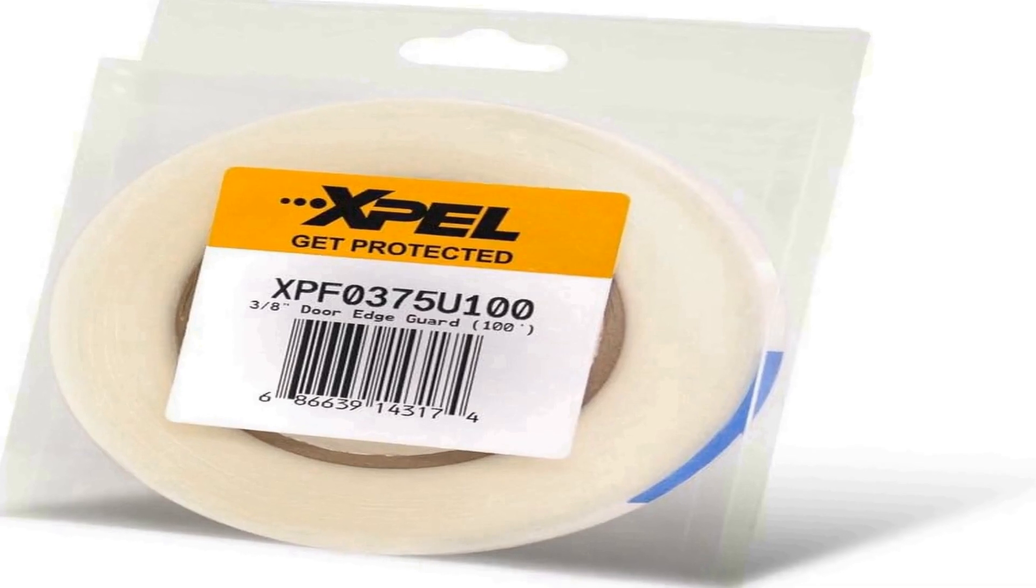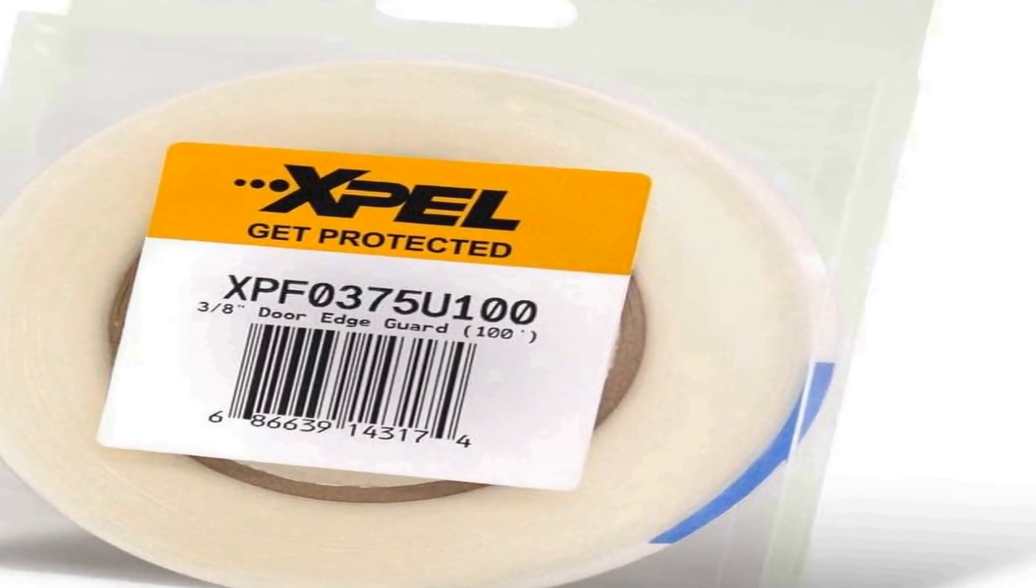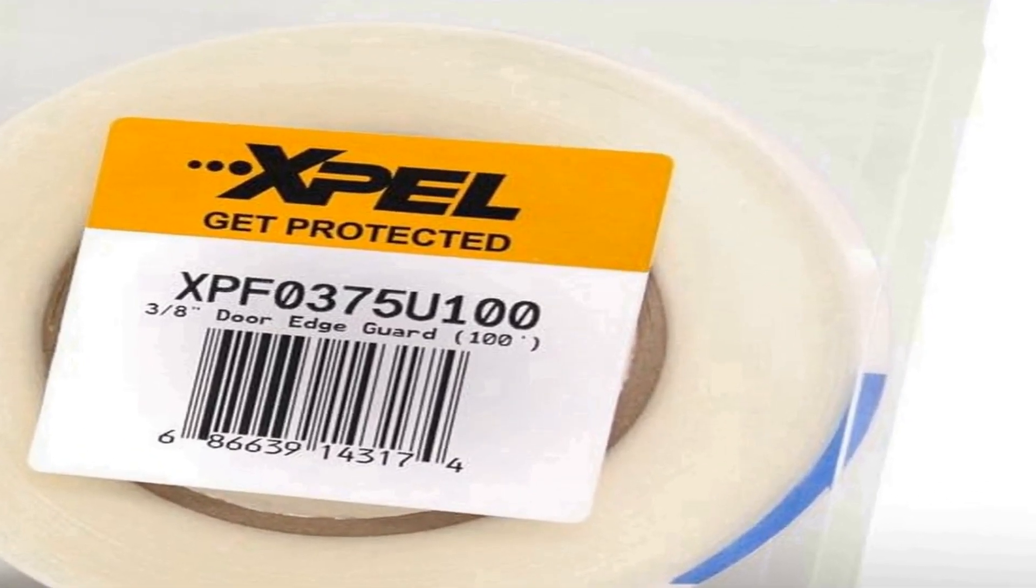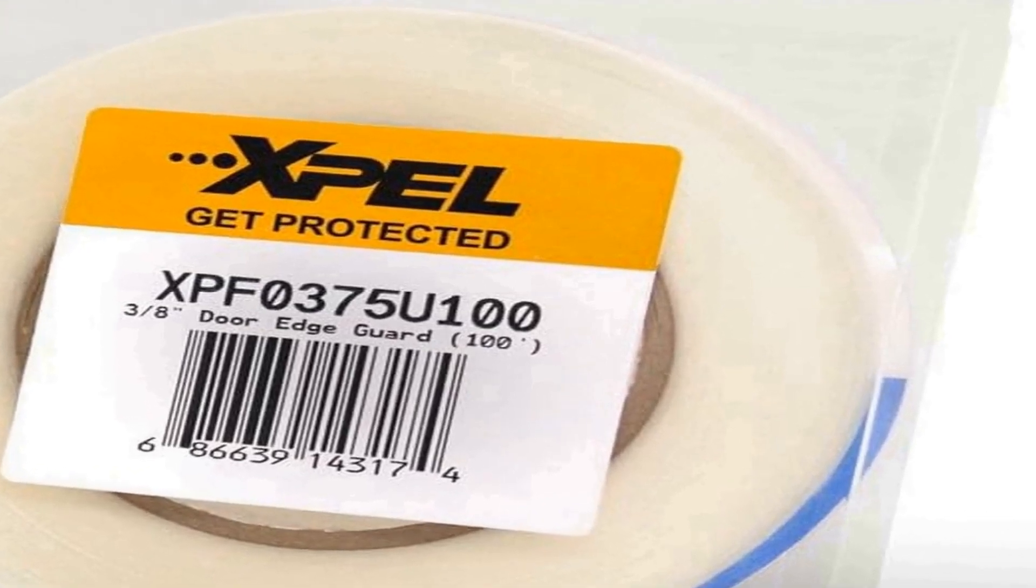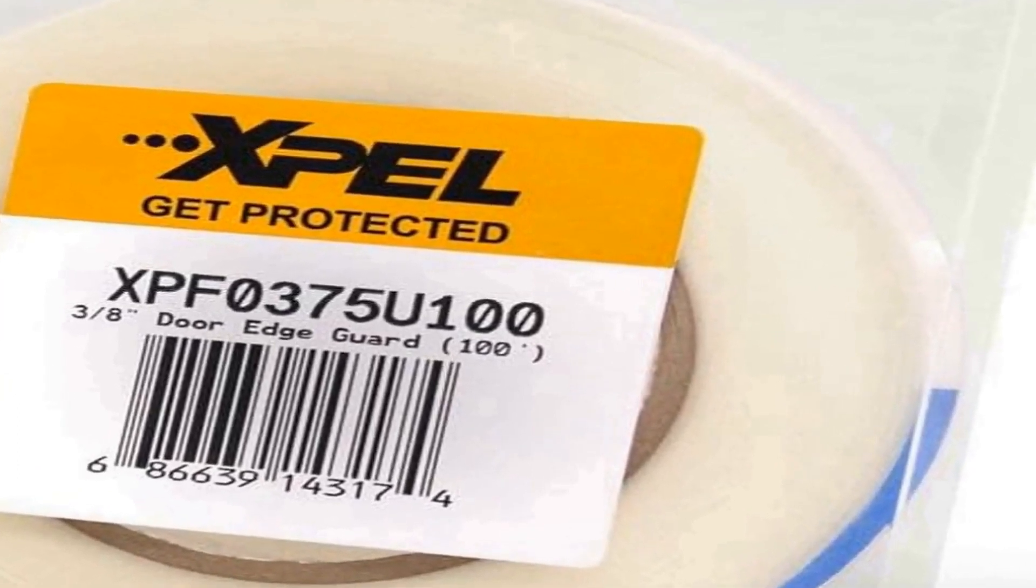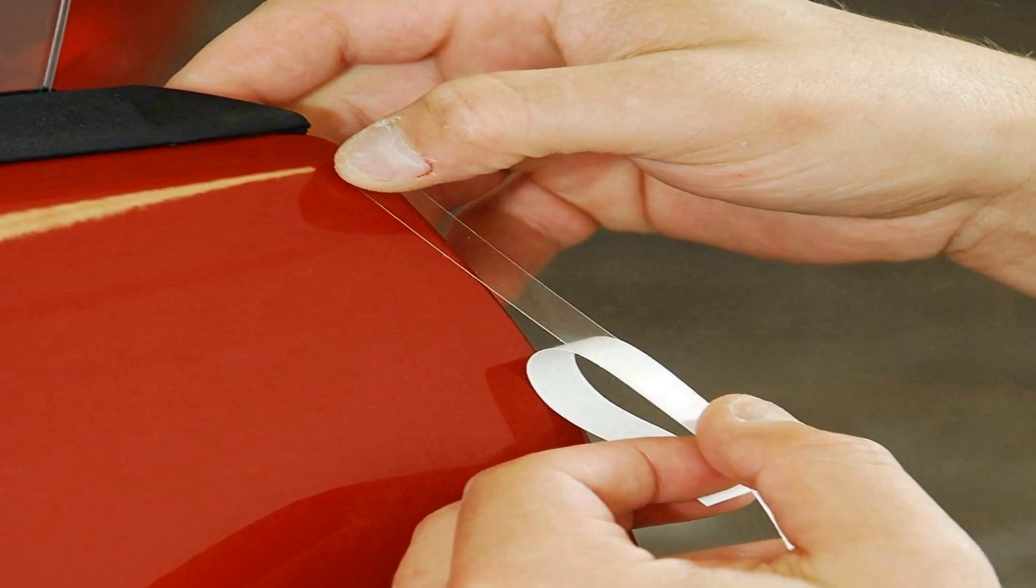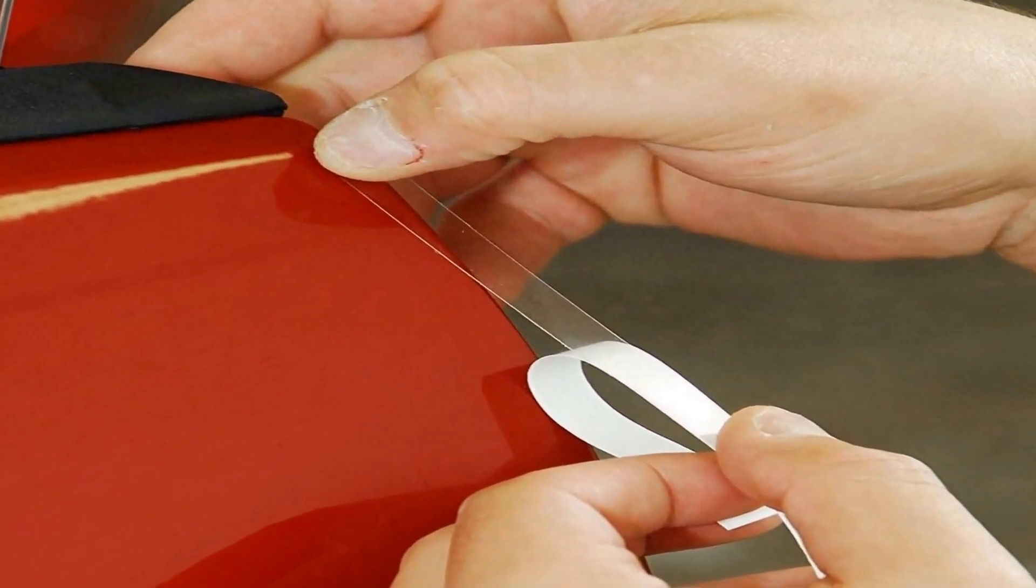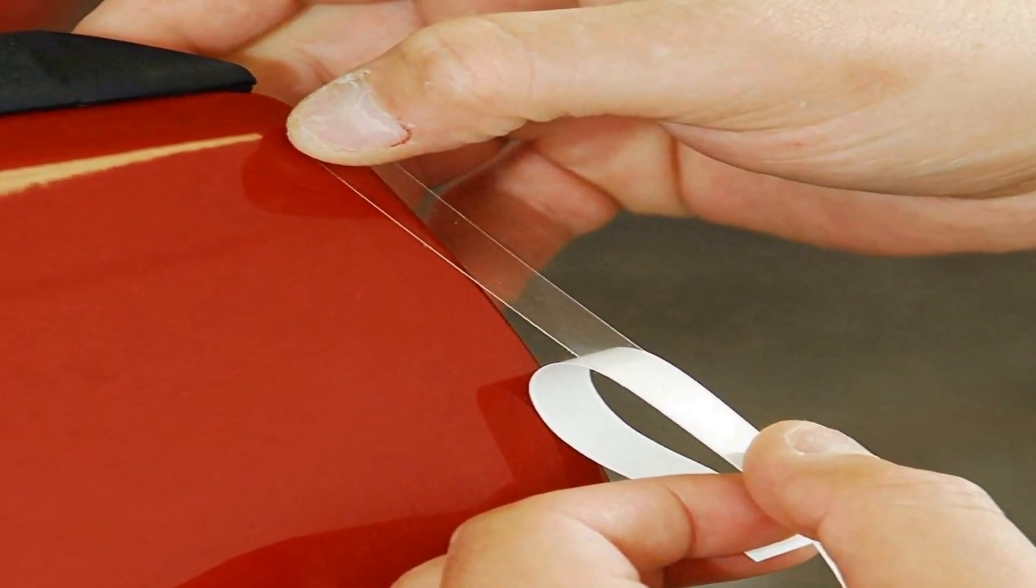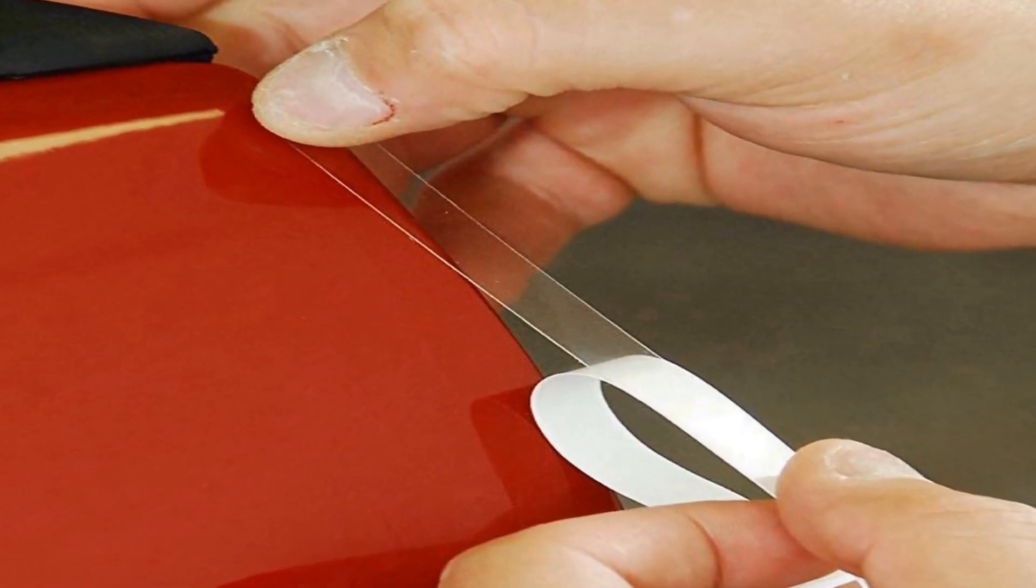The XPEL XPF0375 U100 three-eighths by 100 feet Door Edge Guard is a protective automotive accessory designed to safeguard your vehicle's door edges from dings, scratches, and chips. With a length of 100 feet, this door edge guard provides ample material to cover multiple doors on a single vehicle or protect an entire fleet of cars.